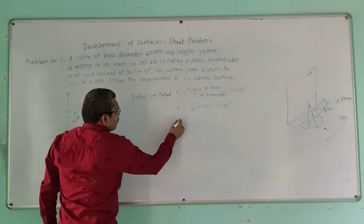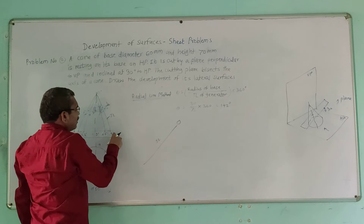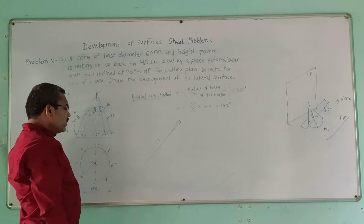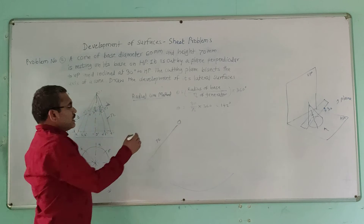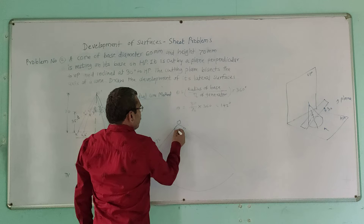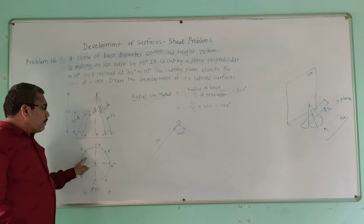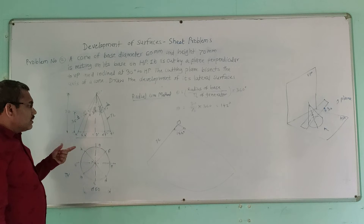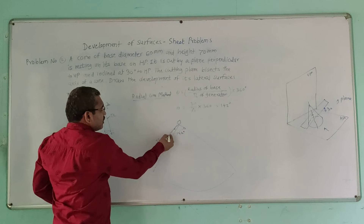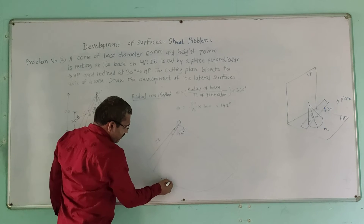Mark point O' anywhere and draw an arc with radius equal to the true length of the generator (76 mm). On this arc, mark an included angle of 142 degrees. Divide this 142-degree angle into 8 equal parts — take the chord length of one division in your compass and step off 8 divisions along the arc.